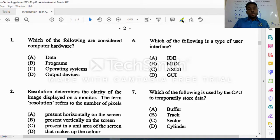The first one looks at which of the following are considered computer hardware. Data, programs, and operating systems would have been considered types of software, so we could look at output devices as being the computer hardware here. I'm just going to do a little highlight.